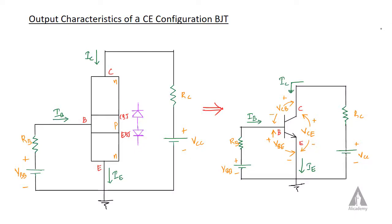Hi, in this lecture we are going to discuss the output characteristics of a common emitter configuration BJT. In the previous session we discussed input characteristics, and in this session we will discuss output characteristics.